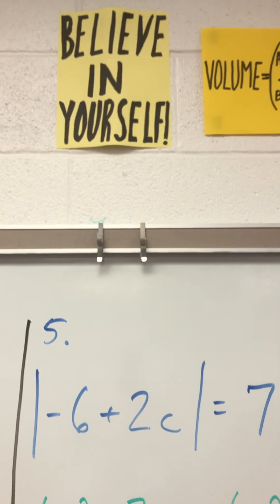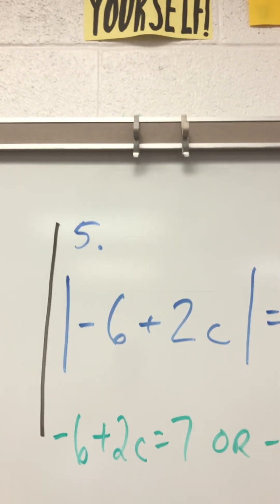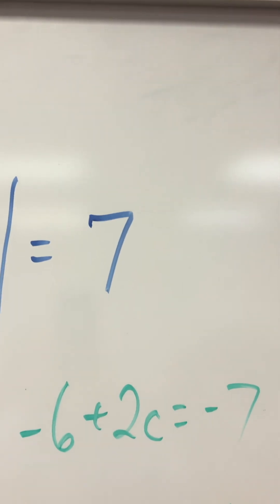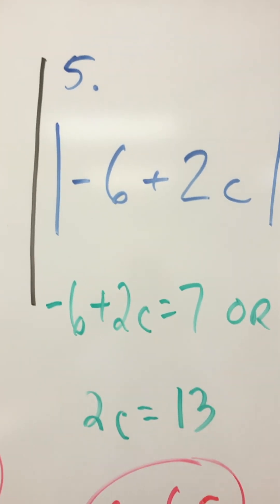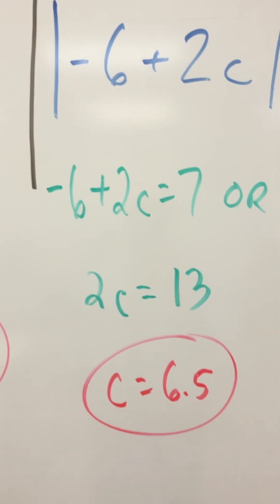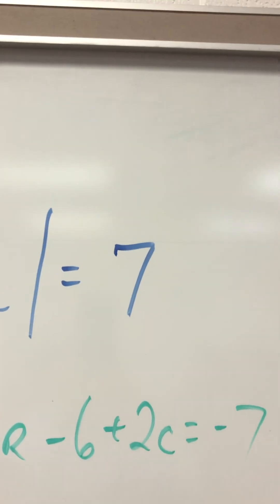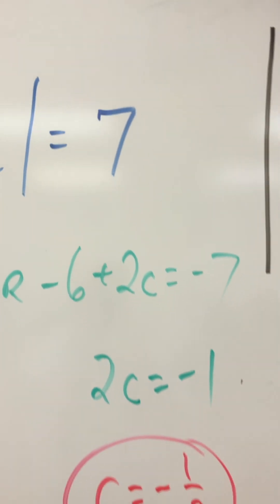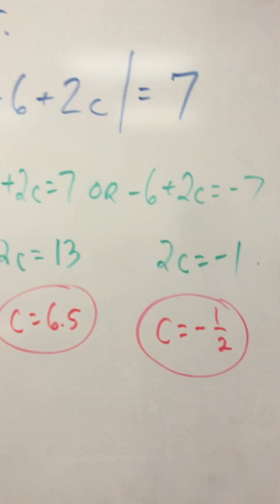Absolute value of negative 6 plus 2c equals 7. So negative 6 plus 2c equals 7 or negative 6 plus 2c equals negative 7. Add 6, 2c equals 13, divide by 2, c equals 6.5. Or add 6 to both sides, 2c equals negative 1, divide by 2, c equals negative 0.5. Two answers.